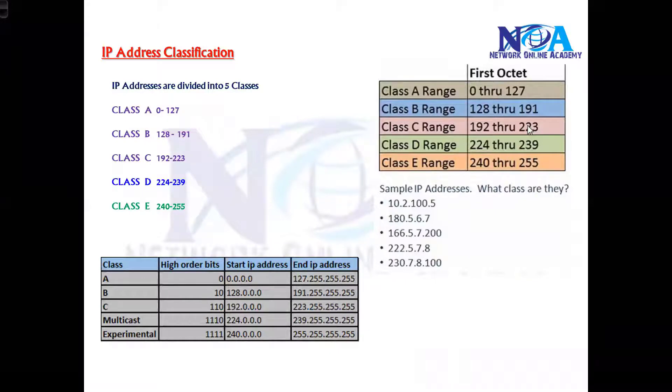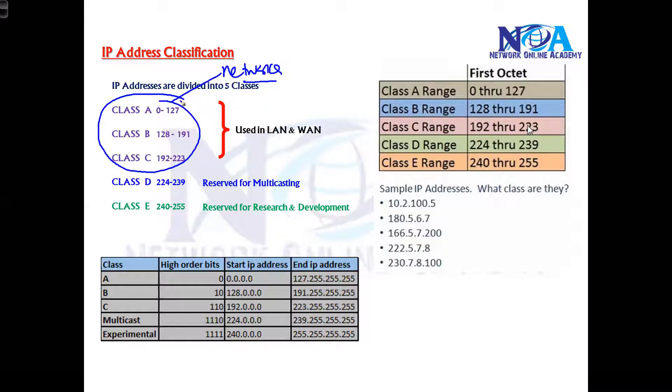Once we understand that, the next thing is we need to know what the classes are used for. In normal LAN and WAN scenarios in our networks, whether it is in a LAN or WAN, we will be using only ABC classes. So we can use only ABC classes, not the other classes.